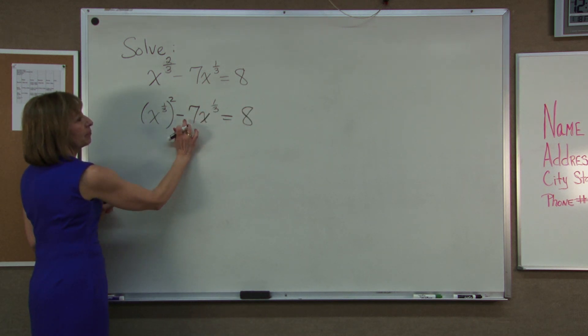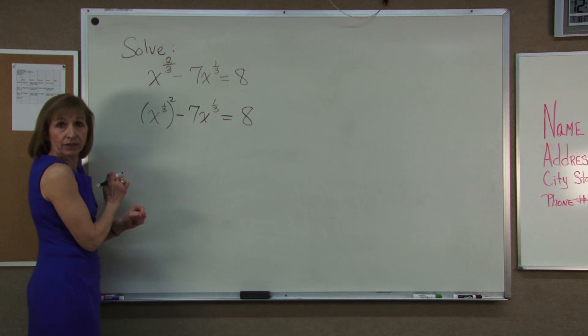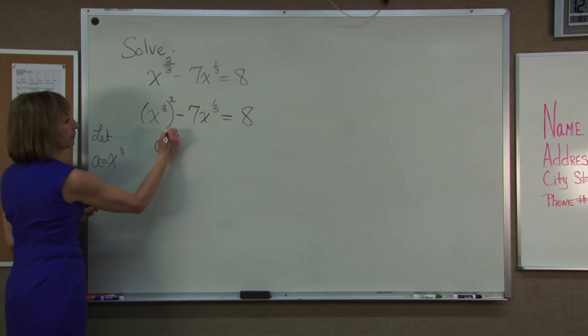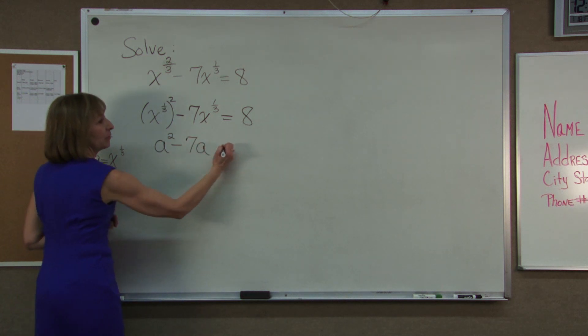So here I have in my negative 7x to the 1 third and x to the 1 third factor and in the first term I have that x to the 1 third only quantity squared. So if I did a substitution, let's say we let a be that x to the 1 third expression that's showing up in both places, then my equation would be a squared minus 7 times a is equal to 8.